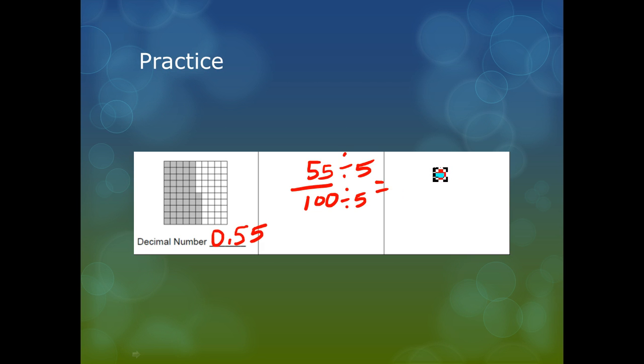And that gives me 55 divided by 5 is 11. 100 divided by 5 is 20. That gives me 11/20. This fraction is in simplest form. I can't divide or multiply this any further. So 11/20 is the same as 55 hundredths. And 55 hundredths is the same as 0.55.